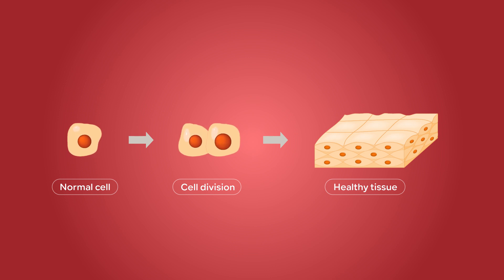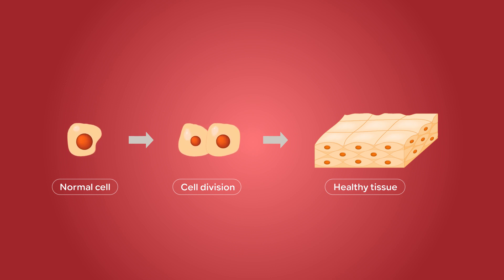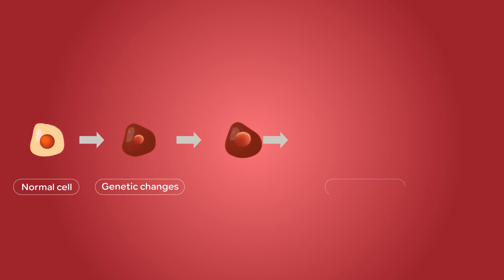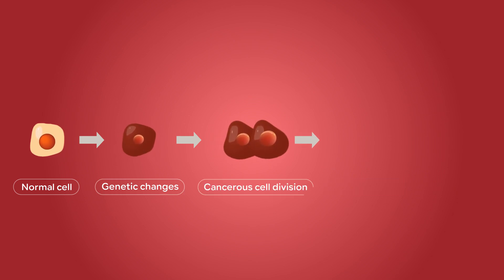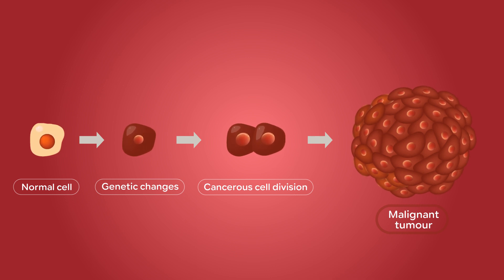Usually, the cells in our body grow, divide, and die in a manner controlled by the DNA within each cell. But when the DNA gets damaged or mutates, the cells start to grow and divide uncontrollably, and they don't die. These masses of abnormal cells are what we call tumors.